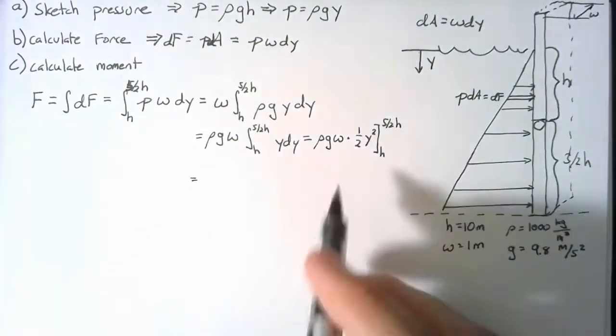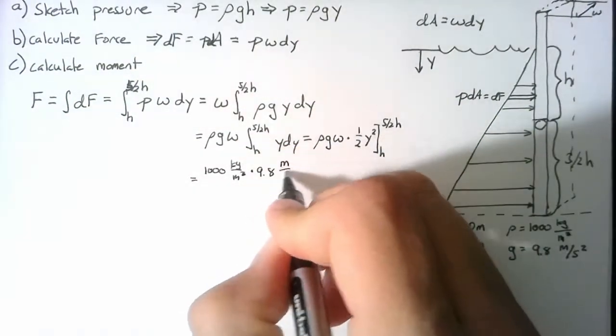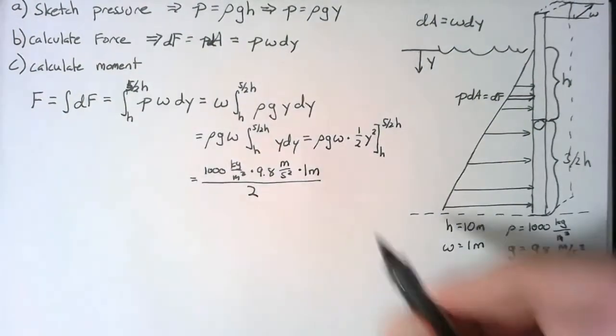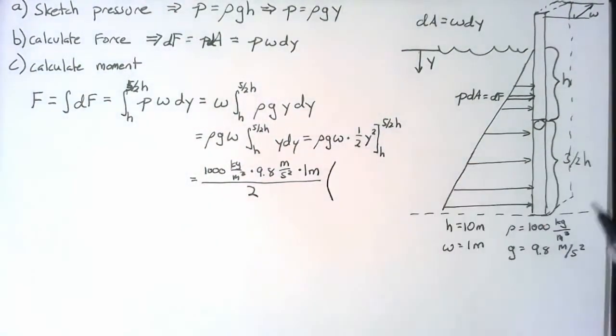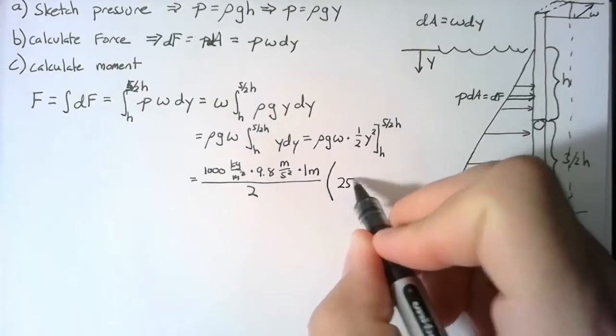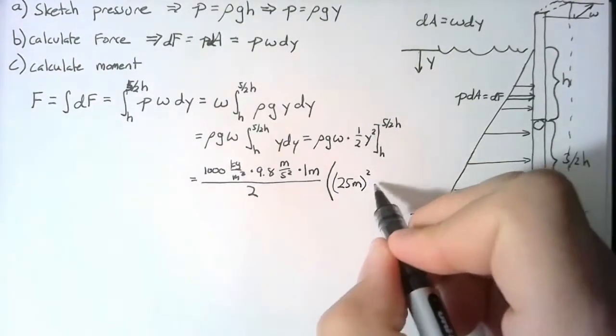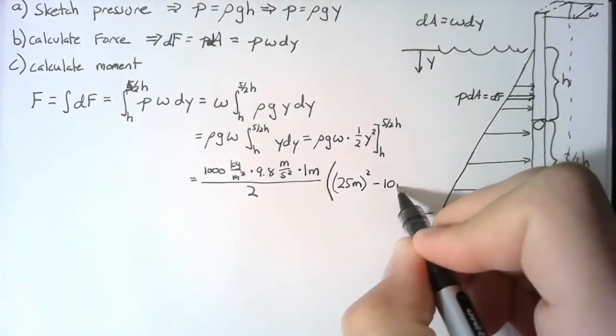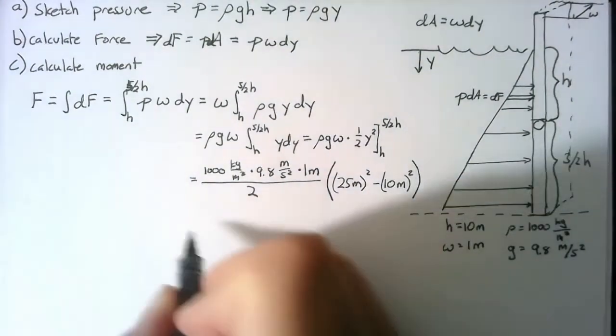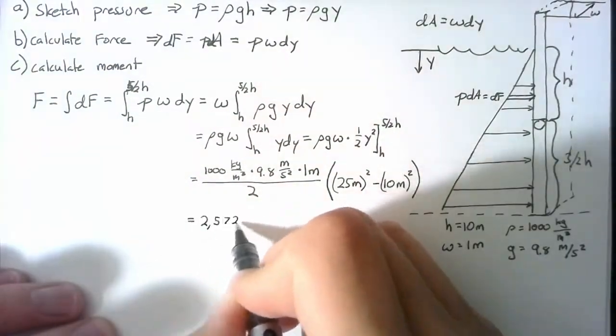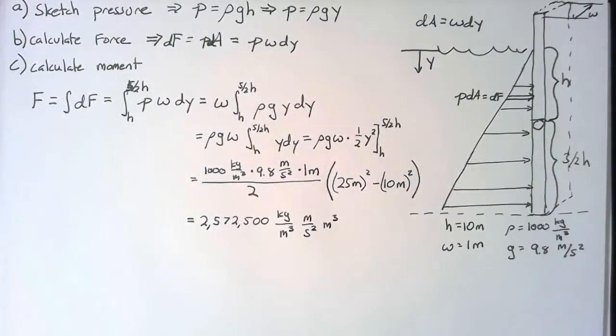Plugging all this in, we end up with... And this will be multiplied by 25 meters squared minus 10 meters squared. Plugging this into my calculator, we end up with roughly 2.5 million.